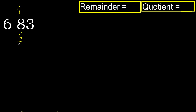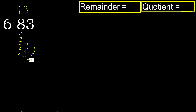Subtract. Next: 23. 6 multiplied by 4 is 24, which is greater. Multiply by 3: 18, which is not greater.